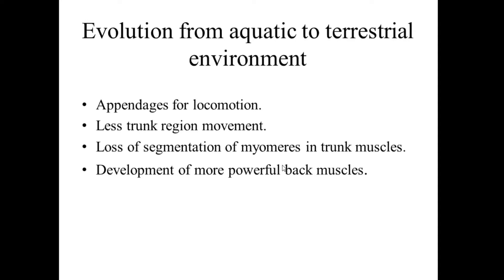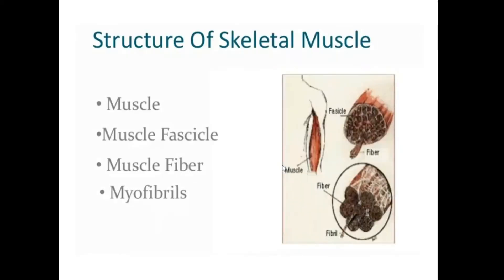The fourth and last advancement in the case of terrestrial animals is the development of more powerful back muscles compared to aquatic organisms. Next, we will study the skeletal muscle system which is involved in the contraction of muscles in higher organisms including humans.